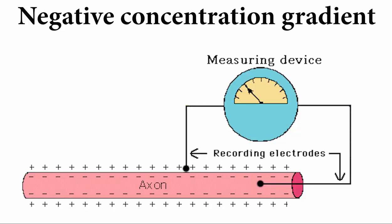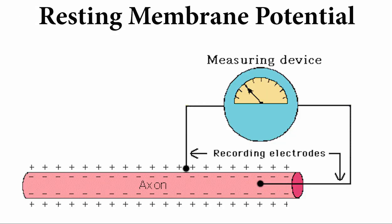A neuron's negative concentration gradient is called resting membrane potential. A neuron's resting membrane potential, also known as RMP, is approximately negative 70 millivolts. Ions are constantly moving in and out of the neuron. But what if potassium ions are leaking out and sodium ions are leaking in? How will the neuron maintain a negative concentration gradient if ions are constantly leaking in and out?